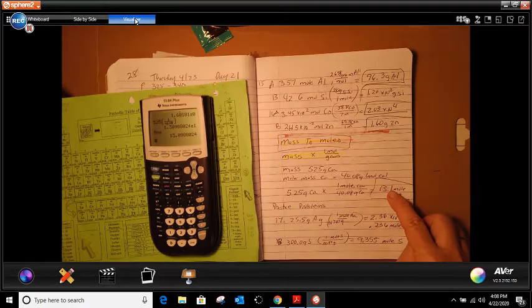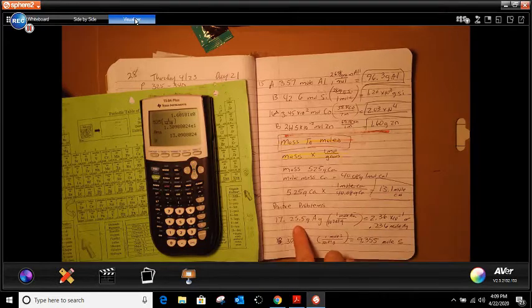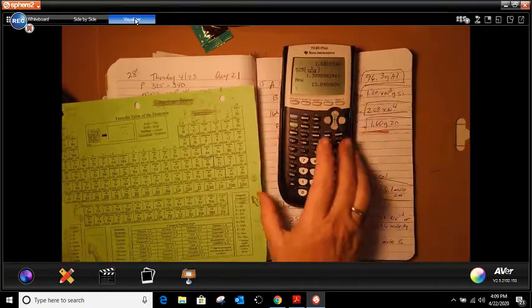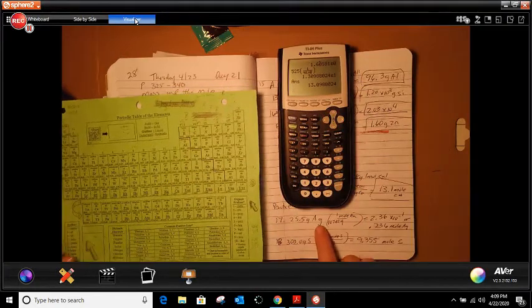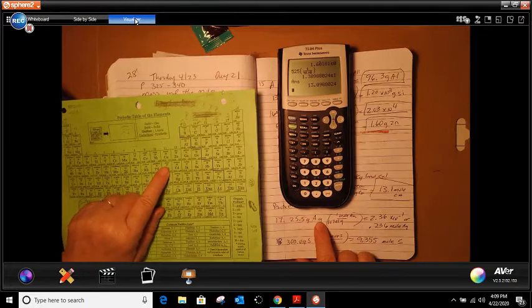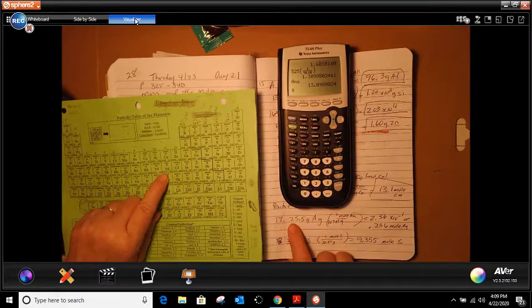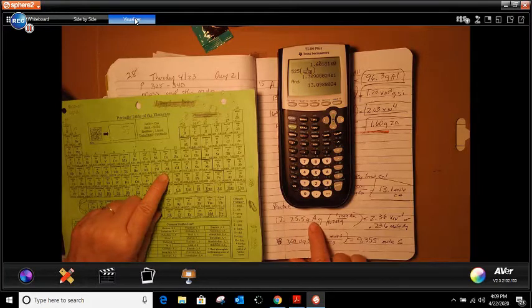So then we have practice problem number 17. This time we have to use our periodic table for that. So this is talking about AG. So here's AG, which is silver. So over here, it told me I had 25.5 grams of AG.